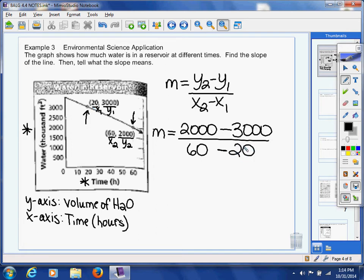So, if you have your calculators handy, use it when you need it, but 2,000 minus 3,000 is negative 1,000. 60 minus 20 is 40. Now, this might not be as easy to do mentally. We block off those zeros there. What's 100 divided by 4? And if you said 25, you're right. And it is negative.